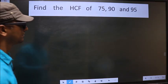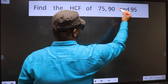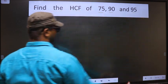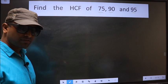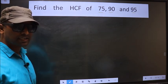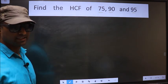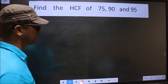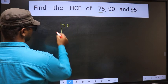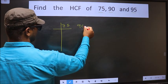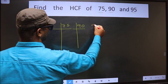Find the HCF of 75, 90, and 95. To find the HCF, first we should do the prime factorization of each number separately. We have 75, 90, and 95.